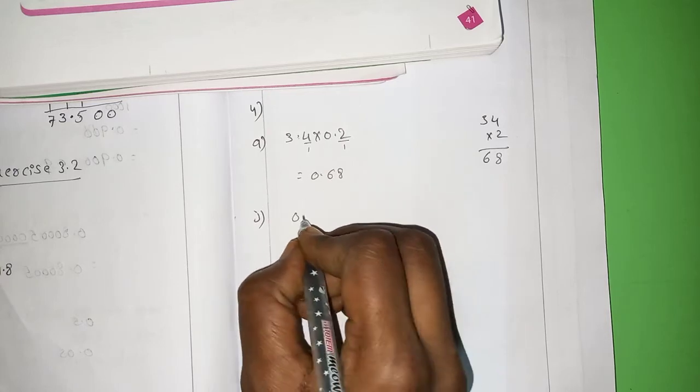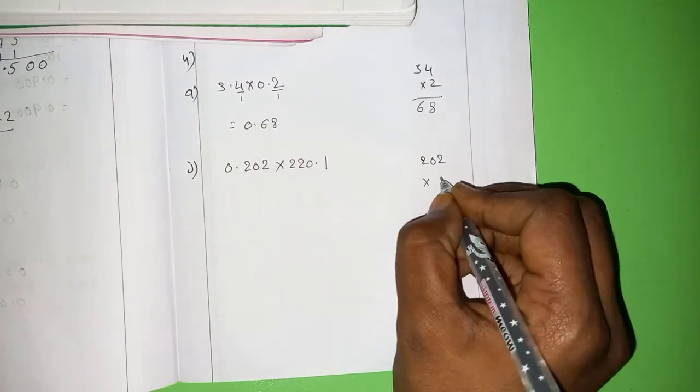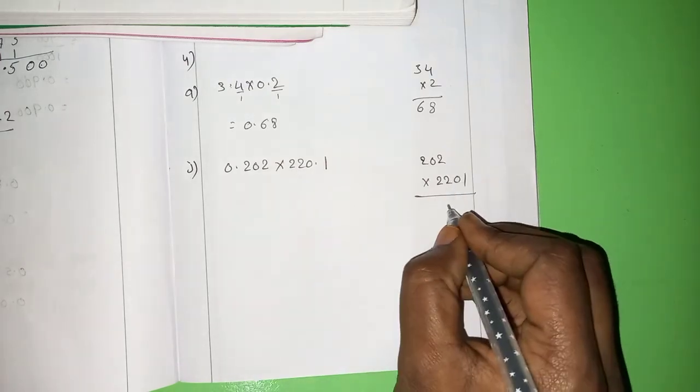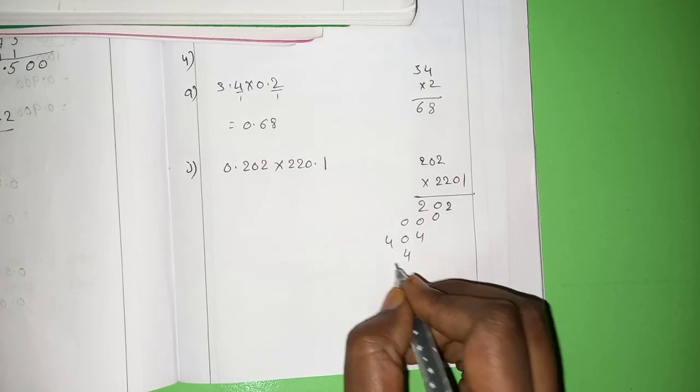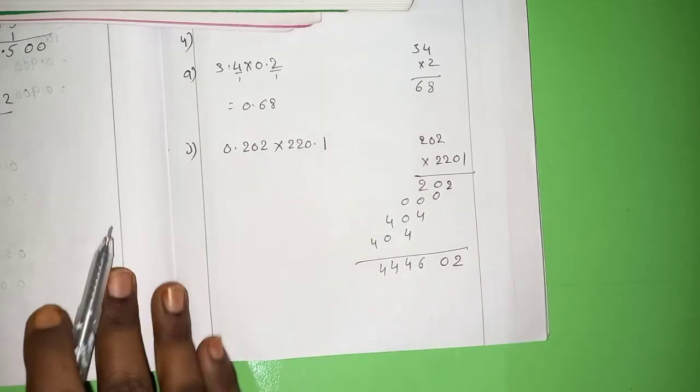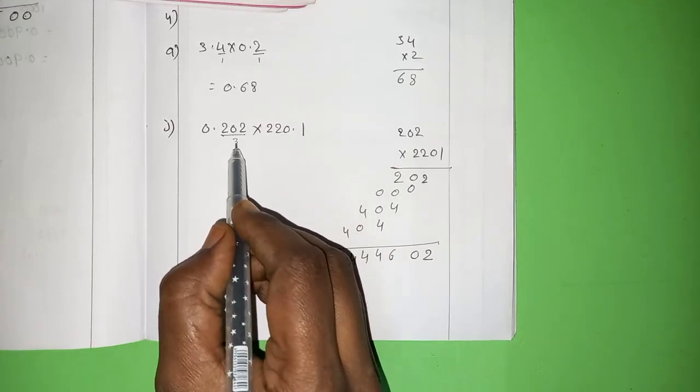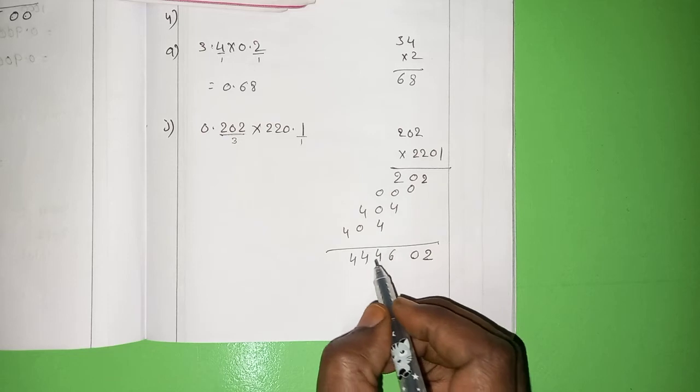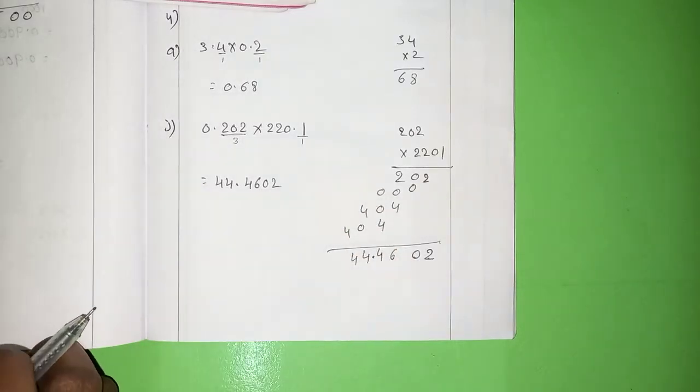In the same way, you have to do each and every one. And I am going to explain the last one. So, 0.202 into 220.1. 2.02 into 220.1. 1 twos. 1 zeros. 0 twos are 4. 2 twos are 4. Again. 2 twos are 4. Now, how many point. In which place we have to keep the point. Here, how many digits are there after point? 3. And here, how many digits are there after point? 1. 3 plus 1, 4. 1, 2, 3, 4. It means 44.4602. That is the answer.